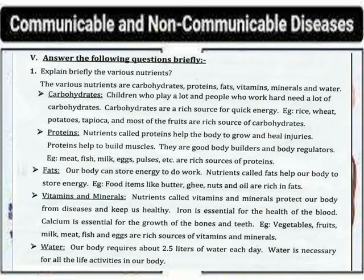The various nutrients are carbohydrates, proteins, fats, vitamins, minerals, and water. Carbohydrates: Children who play a lot and people who work hard need a lot of carbohydrates. Carbohydrates are a rich source of quick energy. Examples include rice, wheat, potatoes, tapioca, and most starchy foods, which are a rich source of carbohydrates.